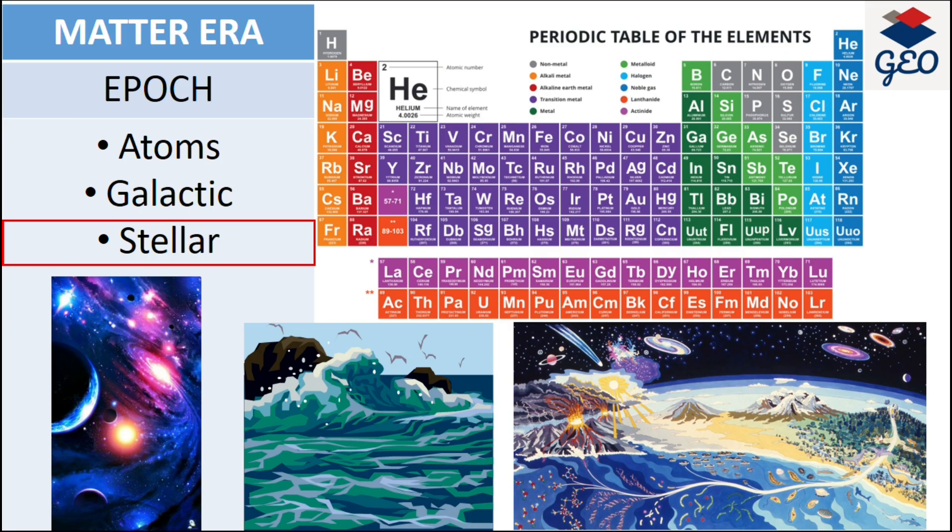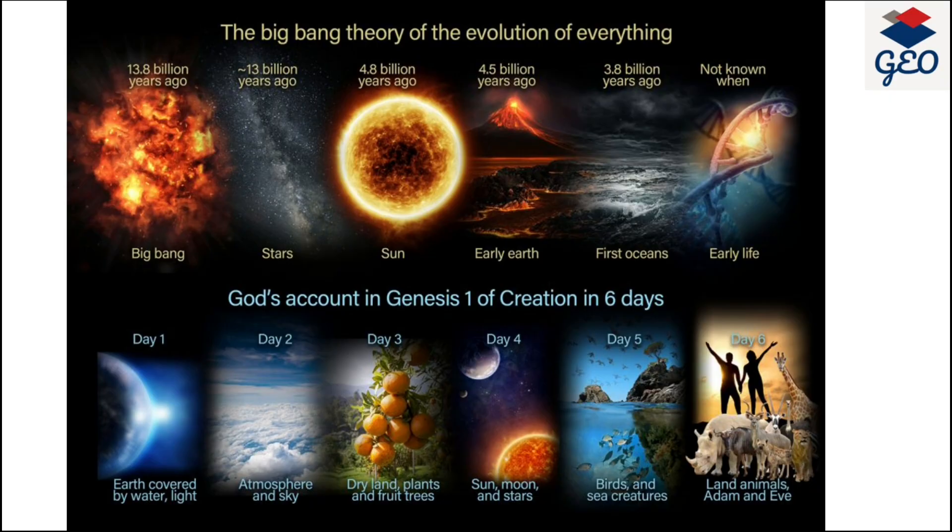These natural elements become the building blocks for the universe. If we assume our universe as a process of six-day formation, day one would be the earth covered by water and light. Day two, atmosphere and sky. Day three, dry land, plants and fruit trees. Day four, sun, moon and stars. Day five, birds and sea creatures.